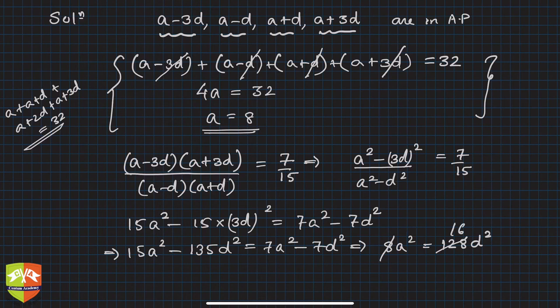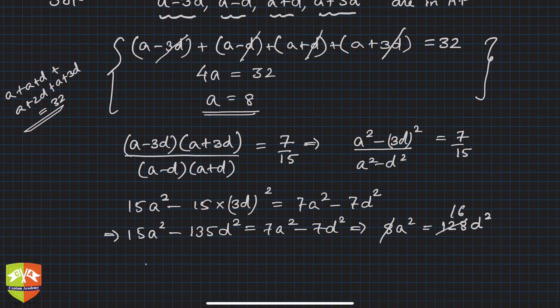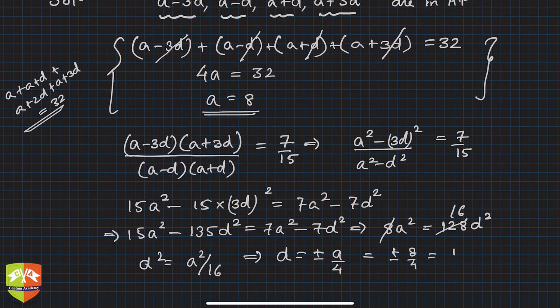So 8 a squared equals 128 d squared, meaning d squared equals a squared over 16. This implies d equals plus or minus a over 4. Since a was 8, d equals plus or minus 2.